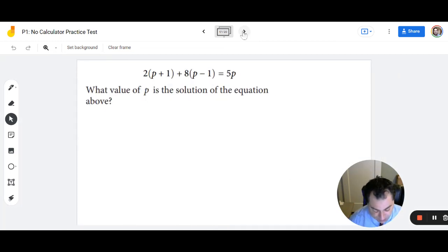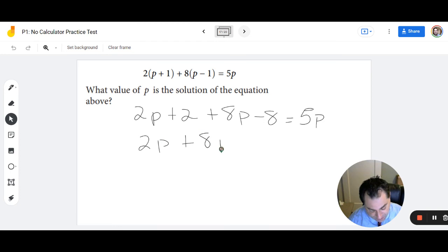Number 17. What value of p is the solution to the equation above? So let's distribute here. So we have 2p plus 2 plus 8p minus 8 equals 5p. All right, let's get numbers on one side, letters on the other. So we have 2p plus 8p minus 5p equals negative 2 plus 8. 8 plus 2 is 10 minus 5 is 5p. 8 minus 2 is 6, divide both sides by 5, and I get p equal to 6 fifths.